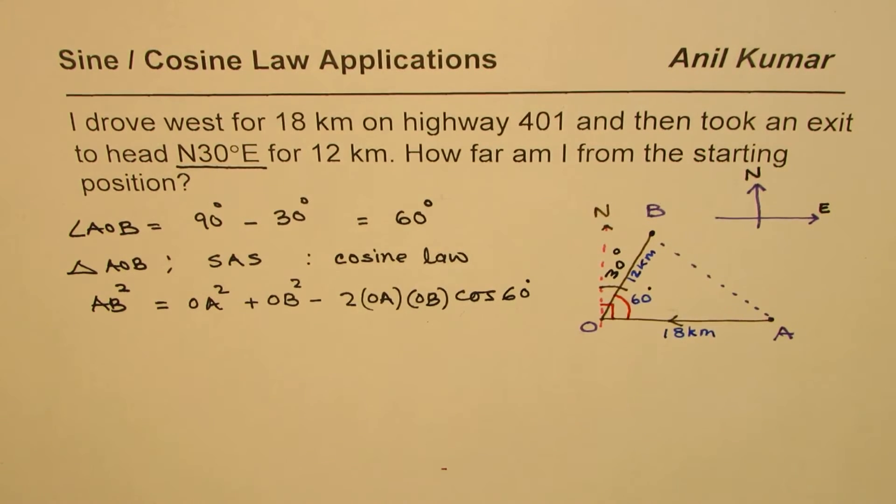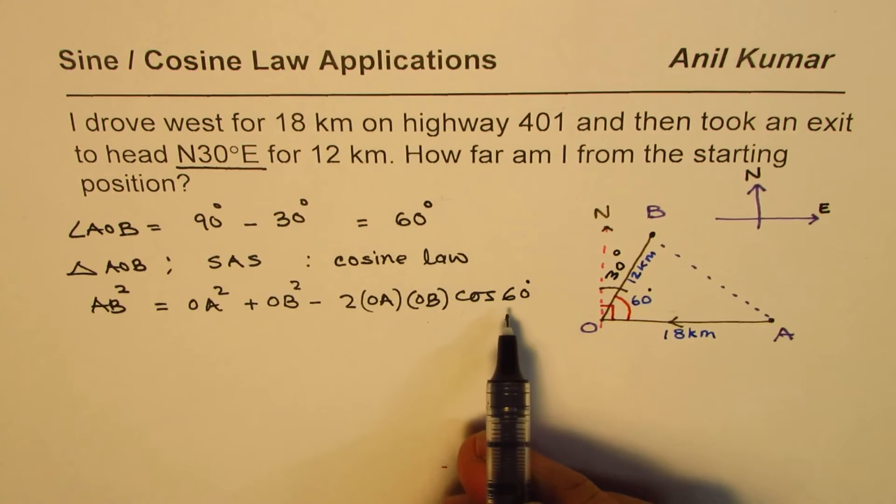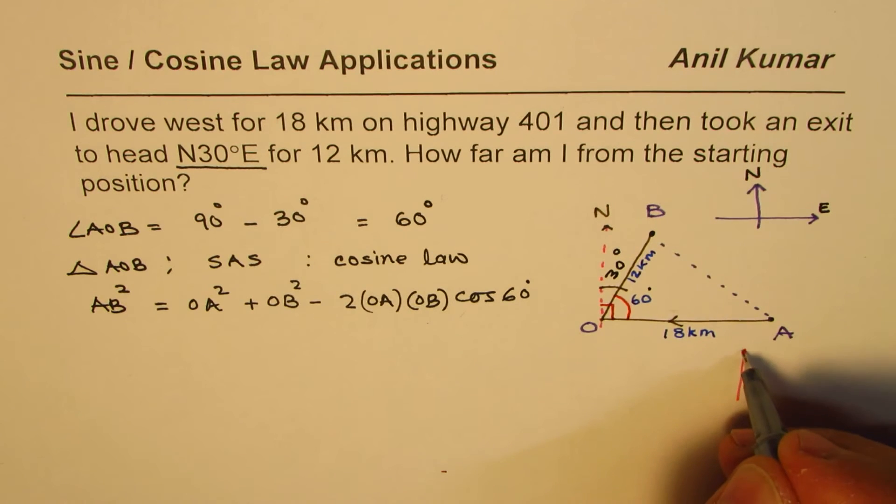That gives you the formula. Cos of 60 degrees, some of you can calculate using calculator, others can use special triangles. Let me make one special triangle, however I'll use calculator to do the calculations.